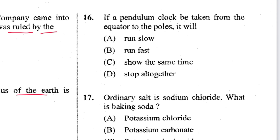Question 16: If a pendulum clock is taken from the equator to the poles, it will run faster. B is the answer.